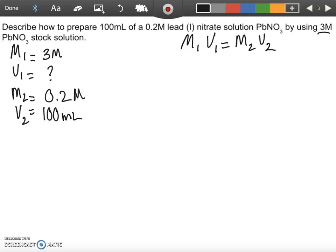All right, so now we can use M1V1 equals M2V2 to figure out how much of the original stock solution we need to pull out in order to do the dilution. Okay, so let's use algebra to get V1 by itself. We need to divide by M1 on both sides. So V1 is equal to M2V2 over M1.